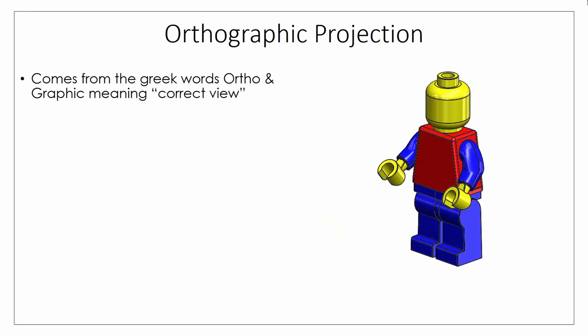We're going to begin by looking at what orthographic projection actually is. Orthographic comes from the Greek words 'ortho' and 'graphic,' which means correct view, and that's what we're trying to achieve — a correct or accurate view or representation of an object.